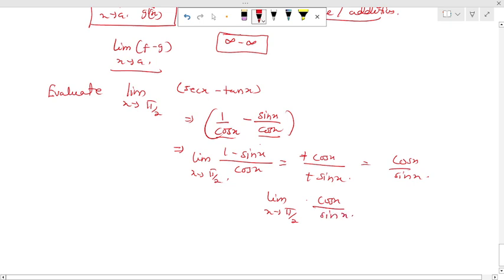So what do I get? What is cos(90)? So I have cosine of π/2 over sine of π/2.